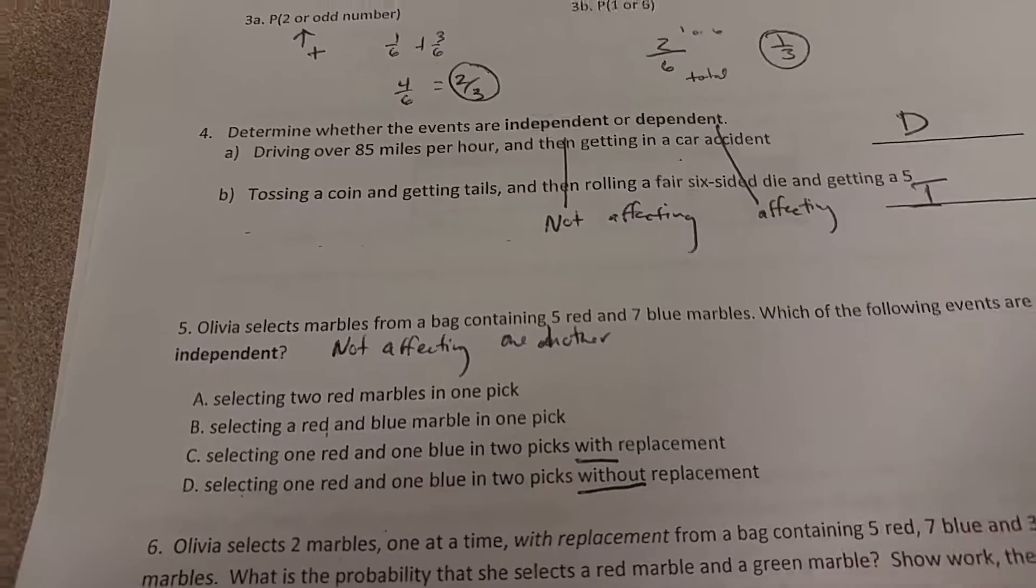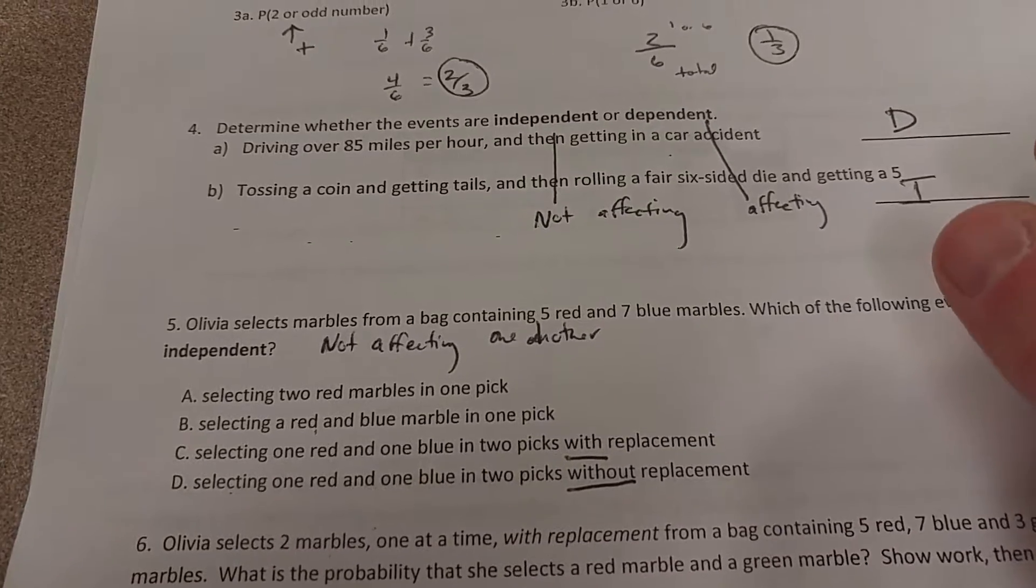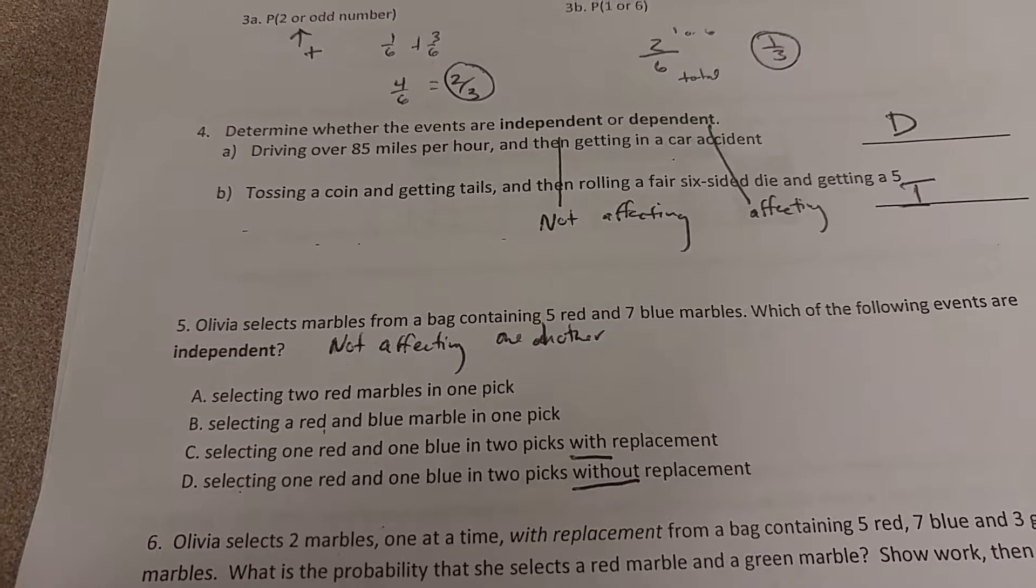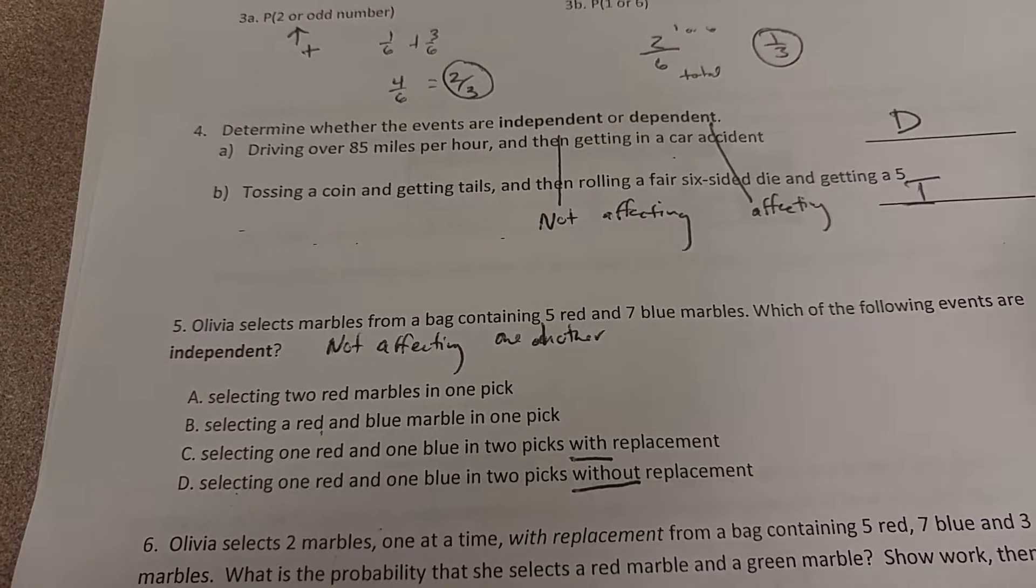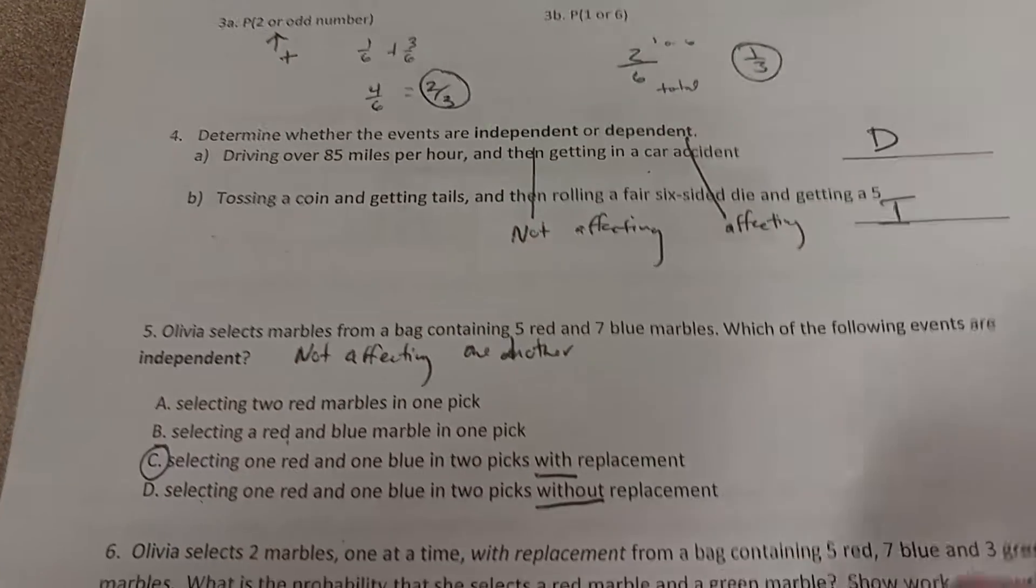If, however, you pick a red one out, you look at it, oh cool, it's red, and then you put it back in, you're not changing the total amount that you have in there. So you're resetting it, so that's creating independent events. So it is letter C that is independent.